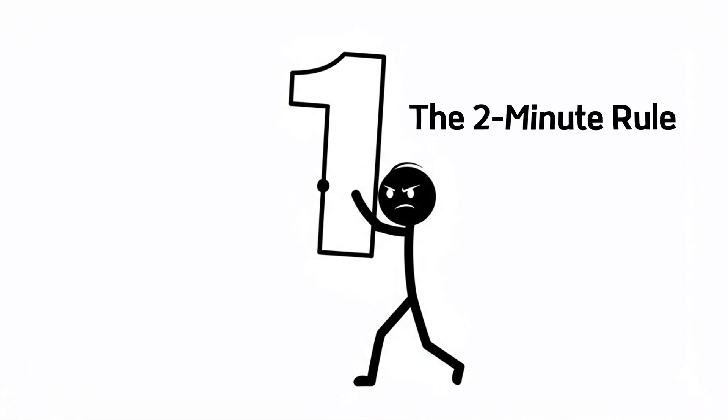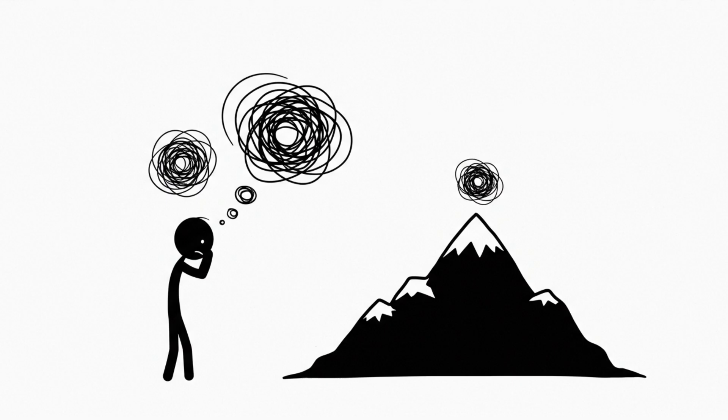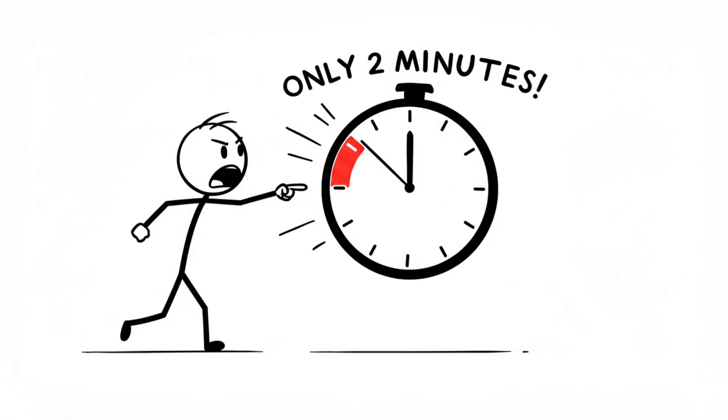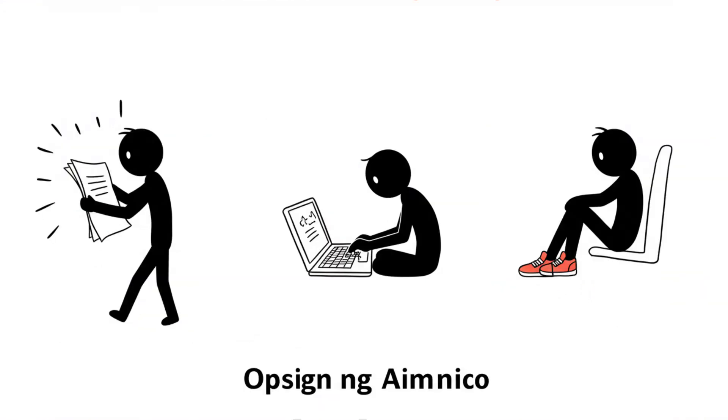Hack number one, the two-minute rule. Overthinking kills action, so shrink the mountain. Tell yourself I only have to do this for two minutes. Open the document, type one sentence, put on your workout shoes.